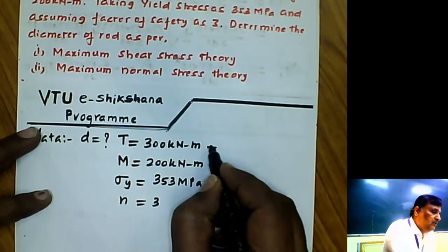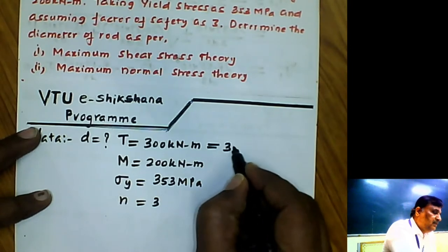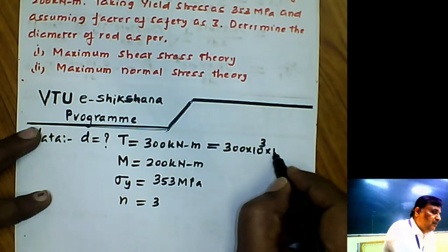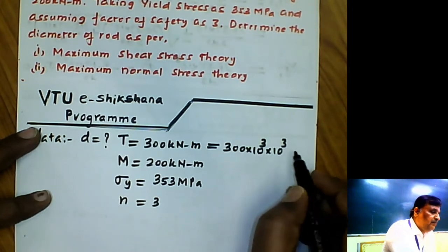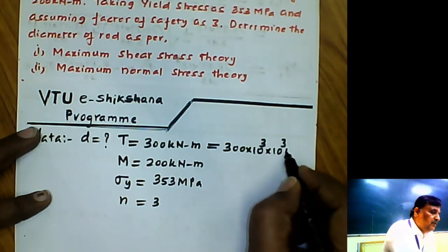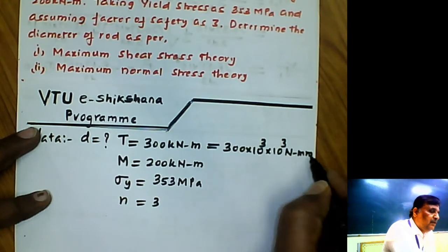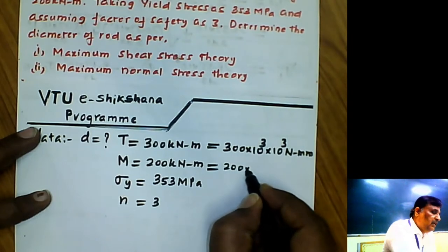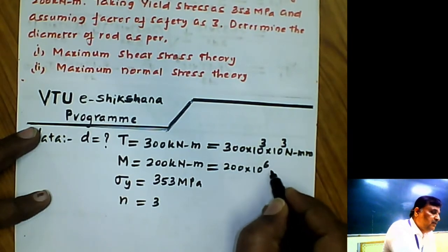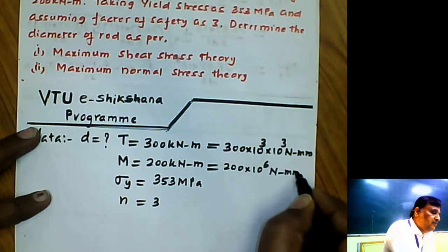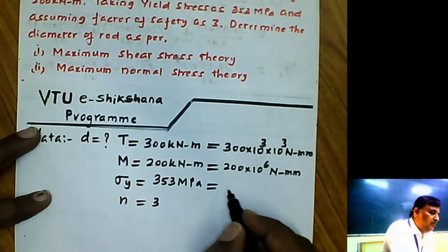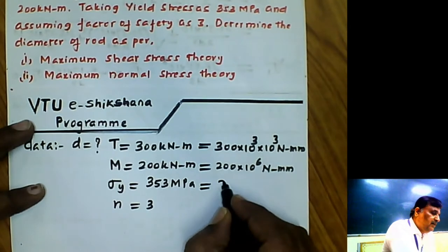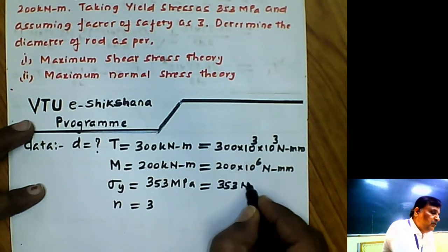Let us convert the units from kNm to Nmm. From kNm to Nm, multiply by 10³, then from m to mm, multiply by another 10³, giving a factor of 10⁶ overall. So torsional moment becomes 300 × 10⁶ Nmm and bending moment becomes 200 × 10⁶ Nmm. Yield stress in MPa equals 353 N/mm².